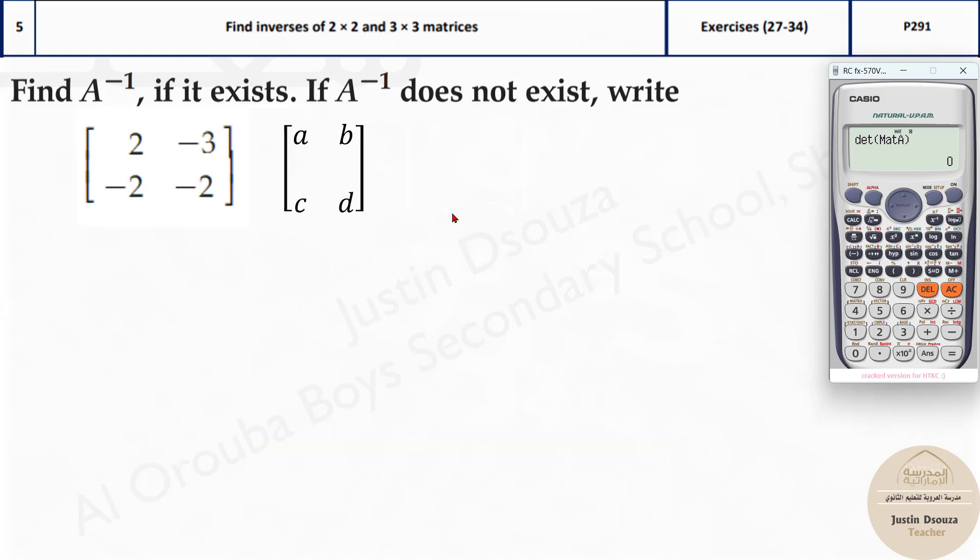And if you want to solve otherwise, you need to consider these as A, B, C, D and find the determinant. Left to right, 2 times minus 2 and then minus 3 times minus 2.